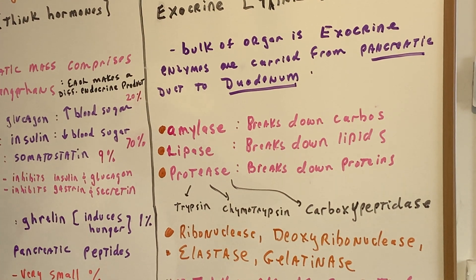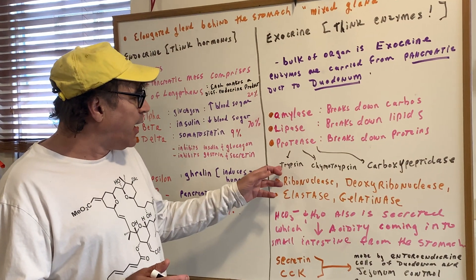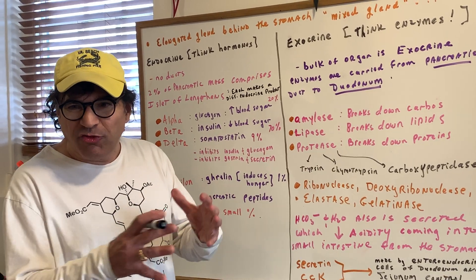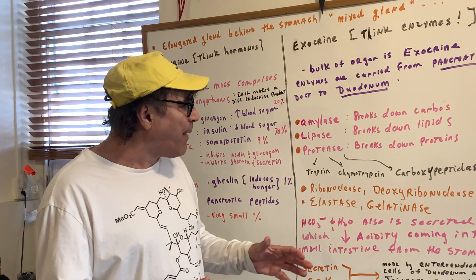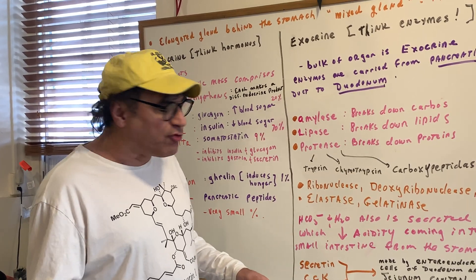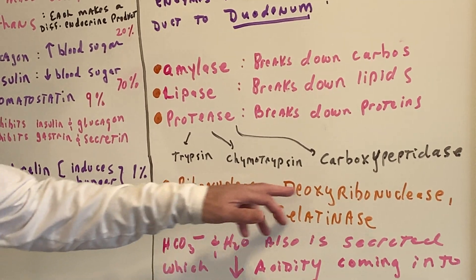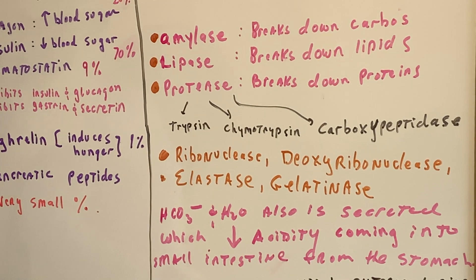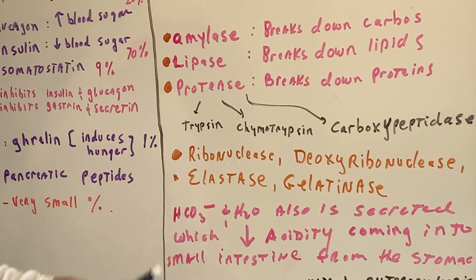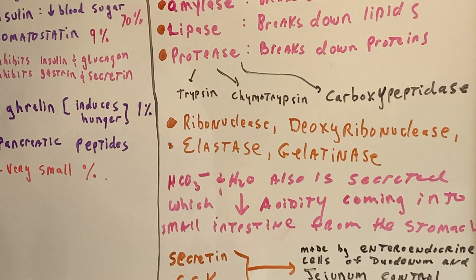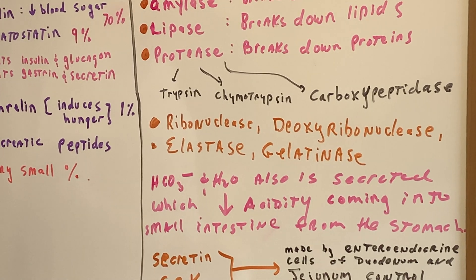When you get to biochemistry, you'll learn that the binding pockets of these proteases are different. For example, the binding pocket of trypsin is different from the larger binding pocket of chymotrypsin, which fits aromatic residues. Because the binding pockets differ, they break different sections of proteins. Then you have ribonucleases and deoxyribonucleases, which break down nucleic acids, as well as elastase and gelatinase, which breaks down collagen. Bicarbonate in water is also secreted by the exocrine cells, and they decrease the acidity coming into the small intestine from the stomach.